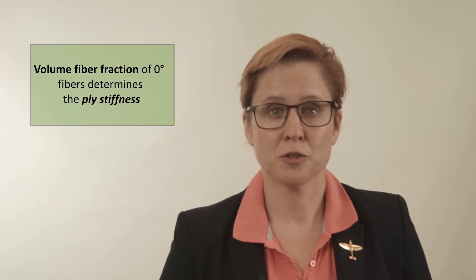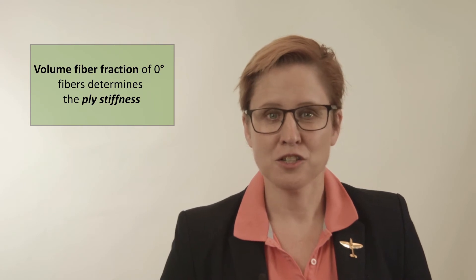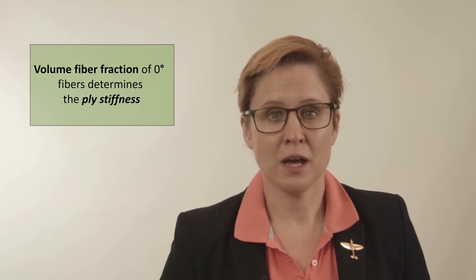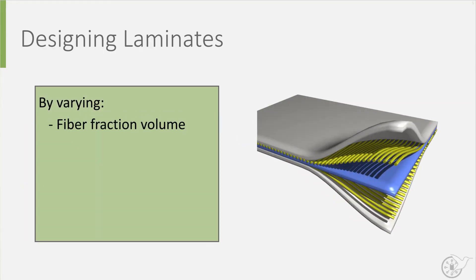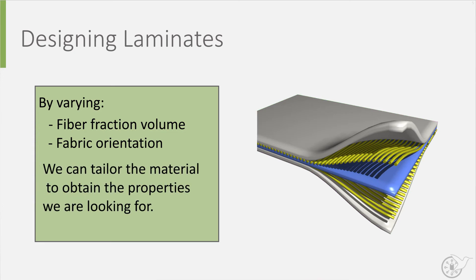The volume fiber fraction of the 0 degree fibers determines the ply stiffness. The higher this fraction, the closer to the fiber behavior the curve will go, and vice versa. Tinkering with the fiber volume fraction and stacking plies under different orientations on top of each other, as is shown here, allows us to tailor material to the properties we are looking for. This combination of ply layers is called a laminate, and is also referred to as a composite material.